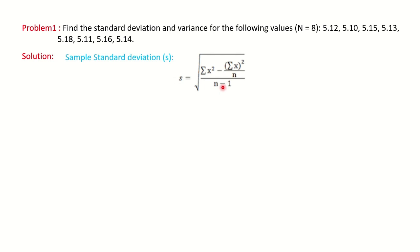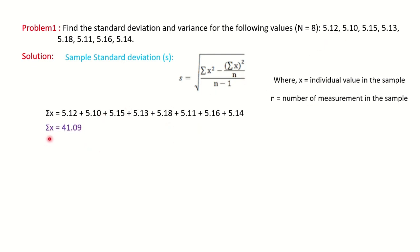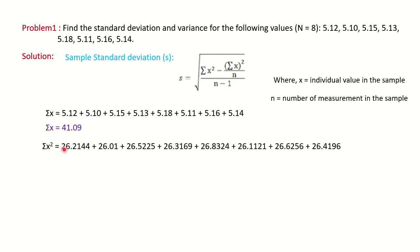In the formula, sigma x refers to the individual value in the sample. We have to find the calculation of sigma x, and also sigma x square. Here n is the number of measurements in the sample. The first step is to calculate the sum of x — write down each individual value and do the summation to get the value of sigma x.